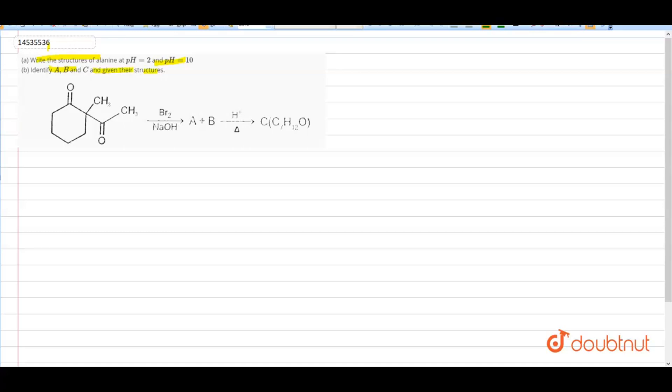First part is write the structure. Then, structure of alanine at pH 2. At pH 2, basic group will ionize. This is the answer of A part.